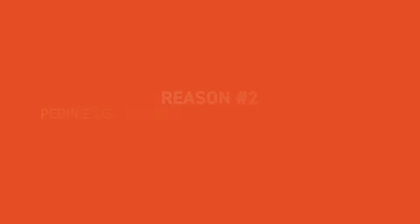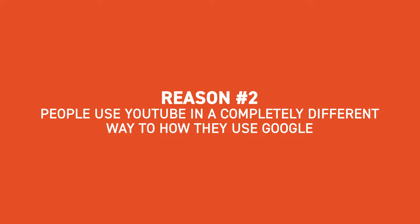The second reason video keyword research differs from traditional keyword research is that people use YouTube in a completely different way to how they use Google. For example, a keyword like 'car insurance' gets searched hundreds of thousands of times on Google but only a handful of times on YouTube. On the other hand, a keyword like 'funny dogs' gets hundreds of thousands of searches on YouTube but very little on Google. So now you know the main differences, let me show you the keyword research techniques I use for my YouTube videos.